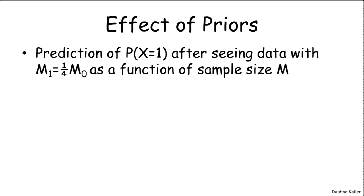And for the moment, we're going to assume that the ratio between the number of ones and the number of zeros is fixed. So that we have one one for every four zeros. And that's the data that we're getting. And now let's see what happens as a function of the sample size. So as we get more and more data, all of which satisfy this particular ratio.